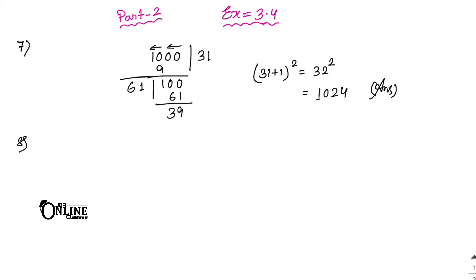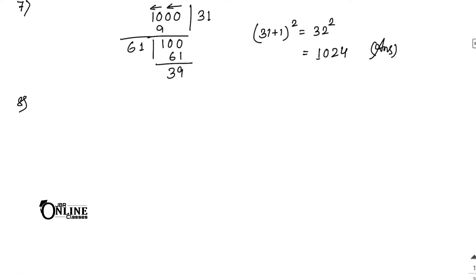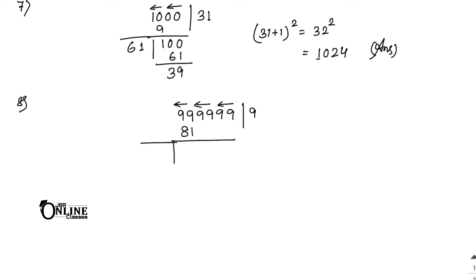The greatest 6-digit number is 999999. We find the square root of 999999 by making pairs. Here 9 squared is 81. Double of 9 is 18; bringing down the next pair we get 170 remainder, then continuing the long division process.